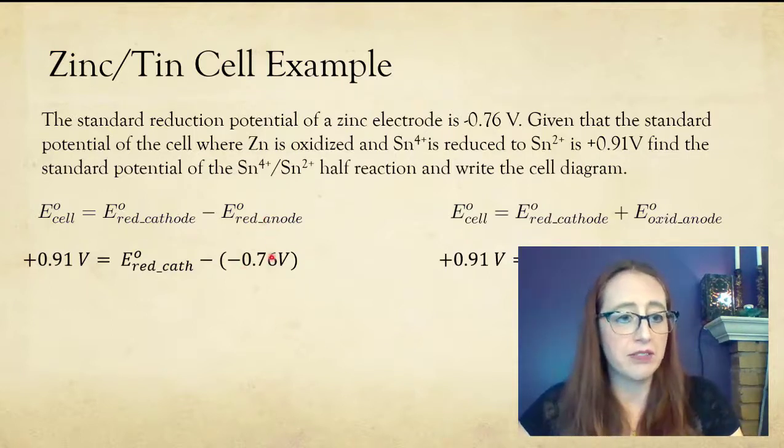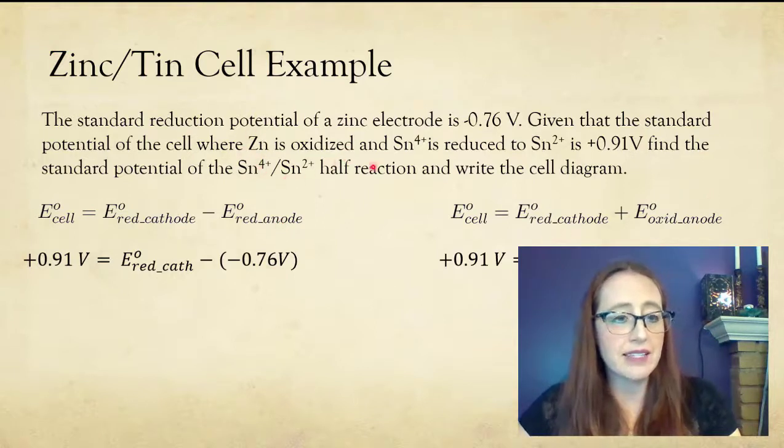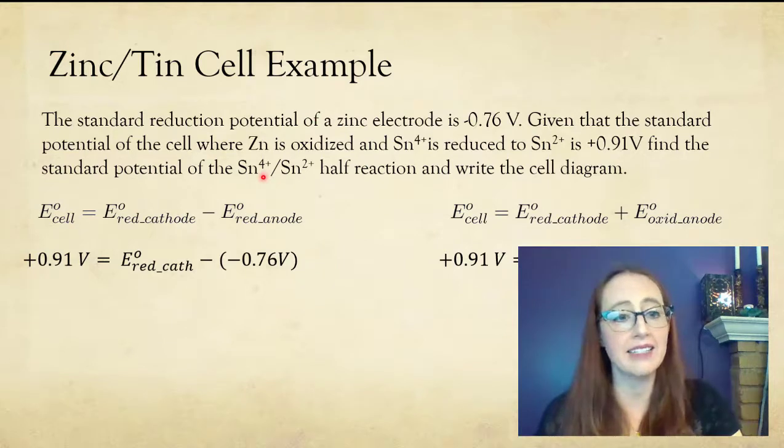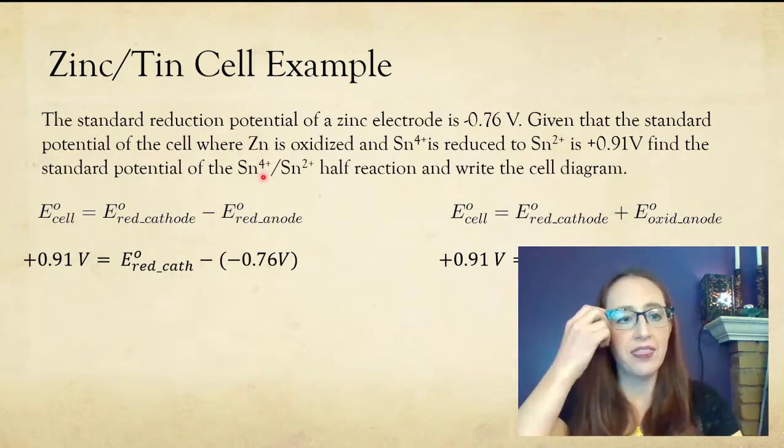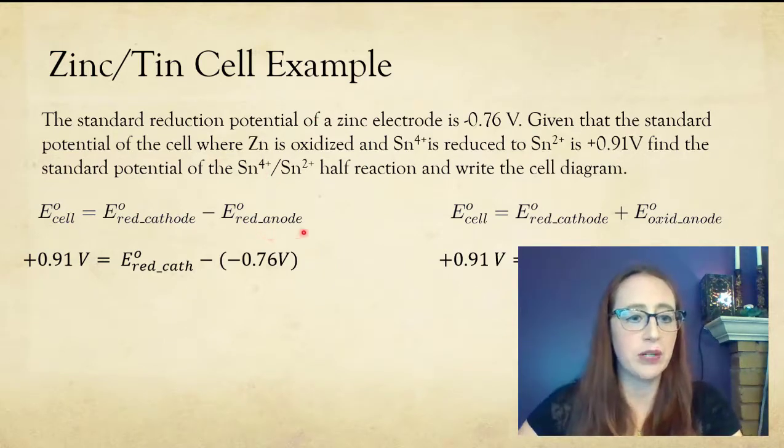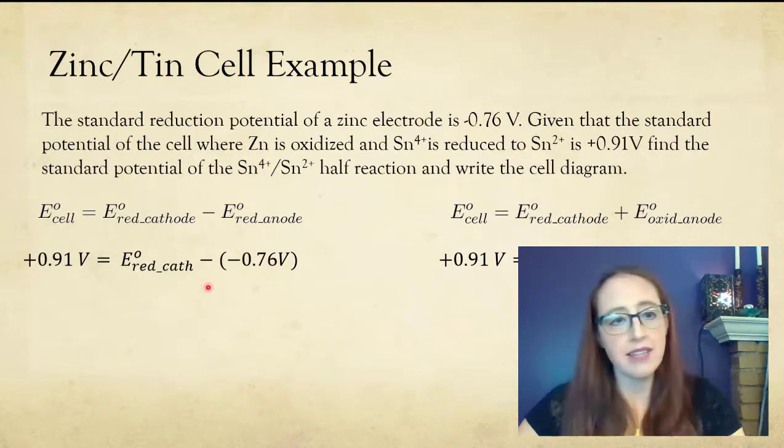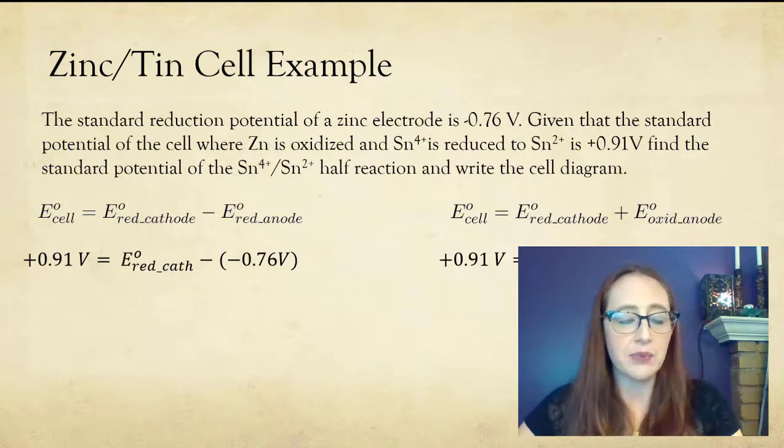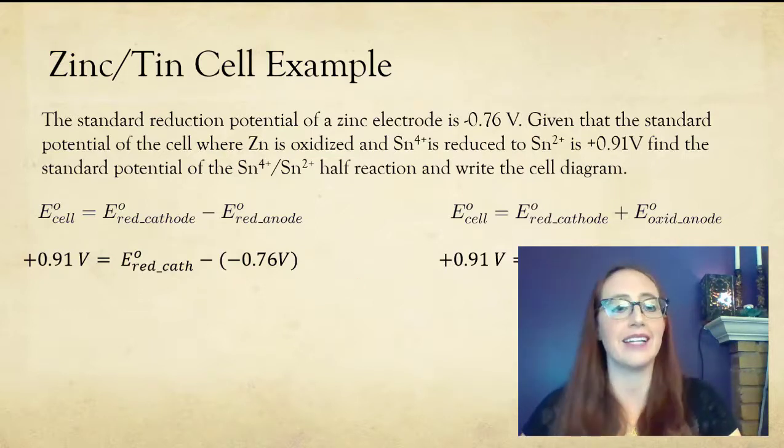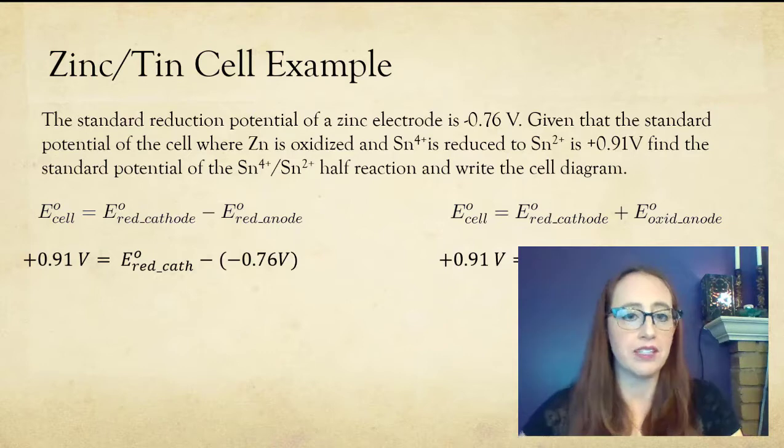Now, you may ask, how did I know to fill in the 0.76V into the anode? And I knew that because it says in the problem that the zinc is oxidized. And since the zinc is oxidized, that value is going to get filled into our anode. So in this case, it's getting filled in as its normal reduction potential. And then in this case, we had to change the sign because it's being oxidized.